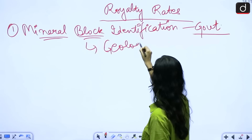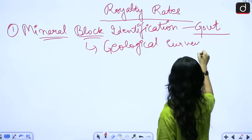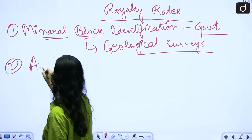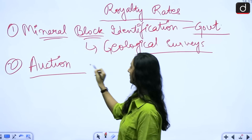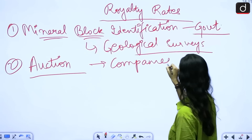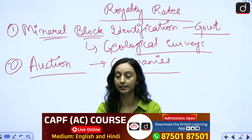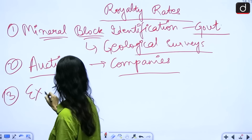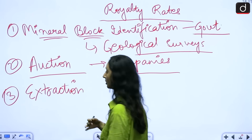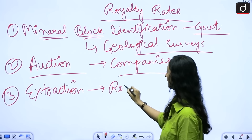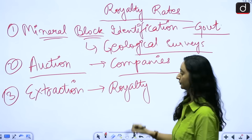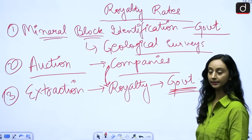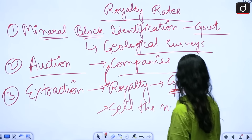The mineral block is identified based on geological surveys conducted by the Government of India. Once identified, the blocks are put up for auction where companies submit tenders and the most competitive bid wins — the mineral block is leased out to that company for extraction. After proper exploration and research, extraction happens, and then the companies have to pay a royalty to the Government of India, after which they can sell the mineral wherever they like.